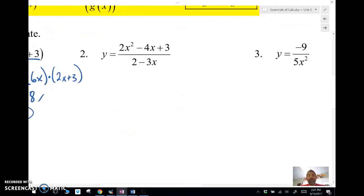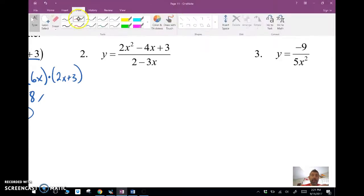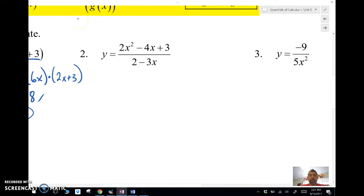So let's take a look now. This time we have a variable in the denominator. This is actually a binomial in the denominator. Whenever that happens, we must use the quotient rule. So quotient rule, y prime, it's quotient rule, QR.